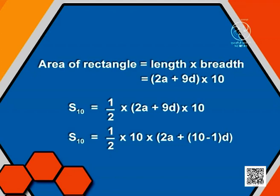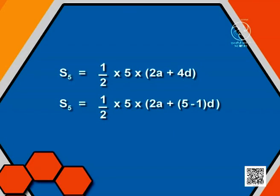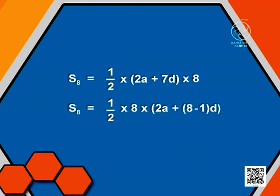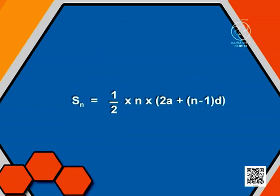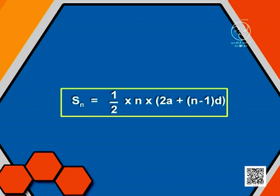Now observe the three expressions which are obtained. S5 is equal to half of 5 into 2A plus 5 minus 1 into D. S8 is equal to half of 8 into 2A plus 8 minus 1 into D. S10 is equal to half of 10 into 2A plus 10 minus 1 into D. So what will be the sum of first n terms of the arithmetic progression? The sum of first n terms is equal to n by 2 into 2A plus n minus 1 into D. This is the formula for finding the sum of first n terms of the AP.